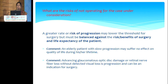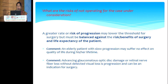What are the risks of not operating for the case under consideration? A greater rate or risk of progression may lower the threshold for surgery, but must be balanced against the benefits or risks of surgery and life expectancy of the patient. An elderly patient with slow progression may suffer no effect on quality of life during their lifetime, so the threshold for surgery would be less. An advancing glaucomatous optic disc damage or retinal nerve fiber loss without detected visual field loss is progression and can be an indication for surgery in some cases.